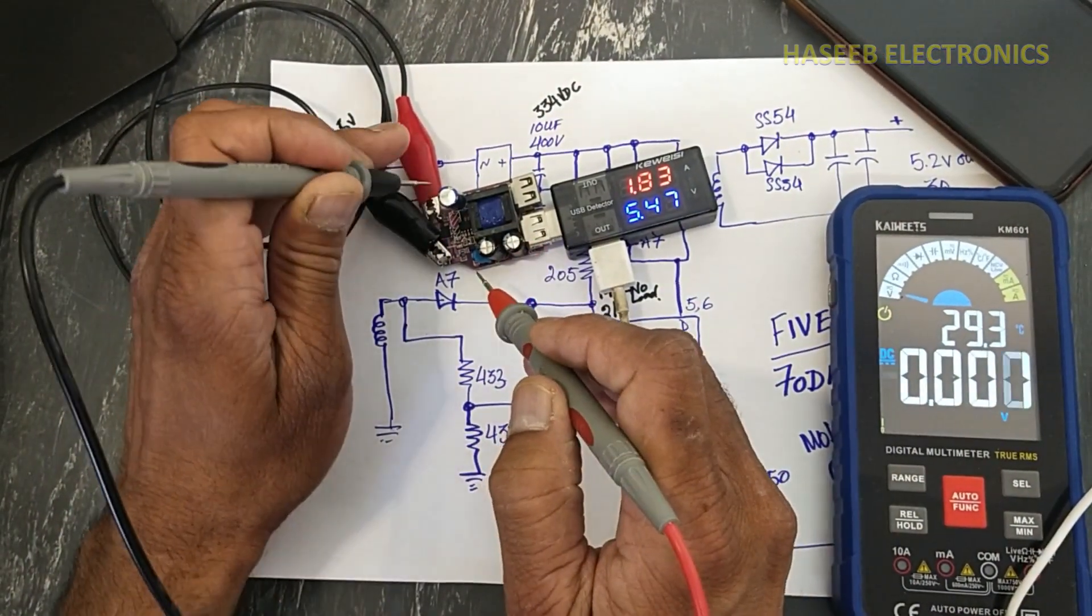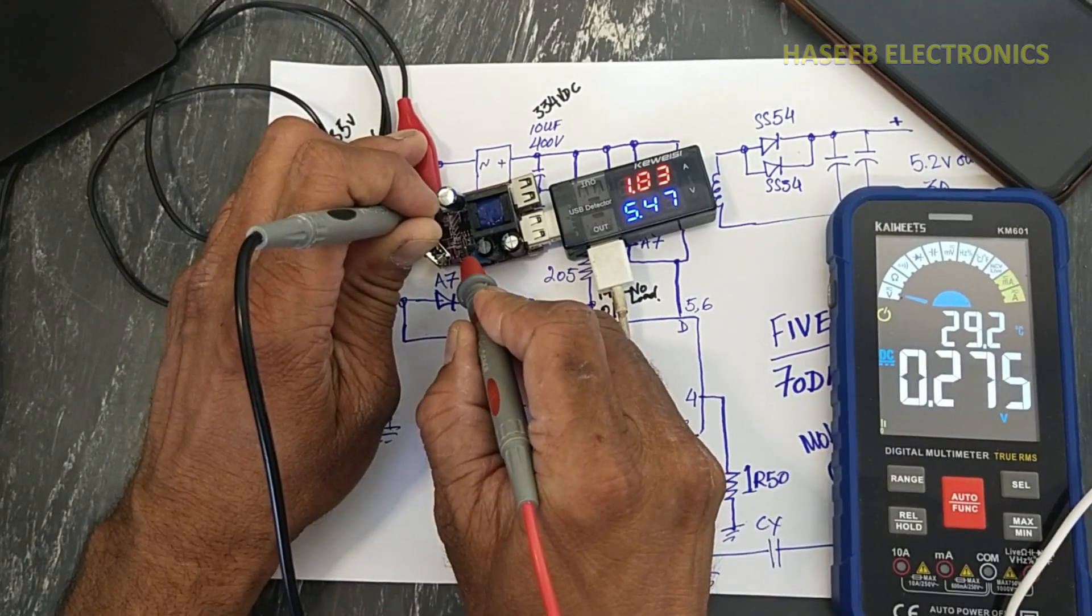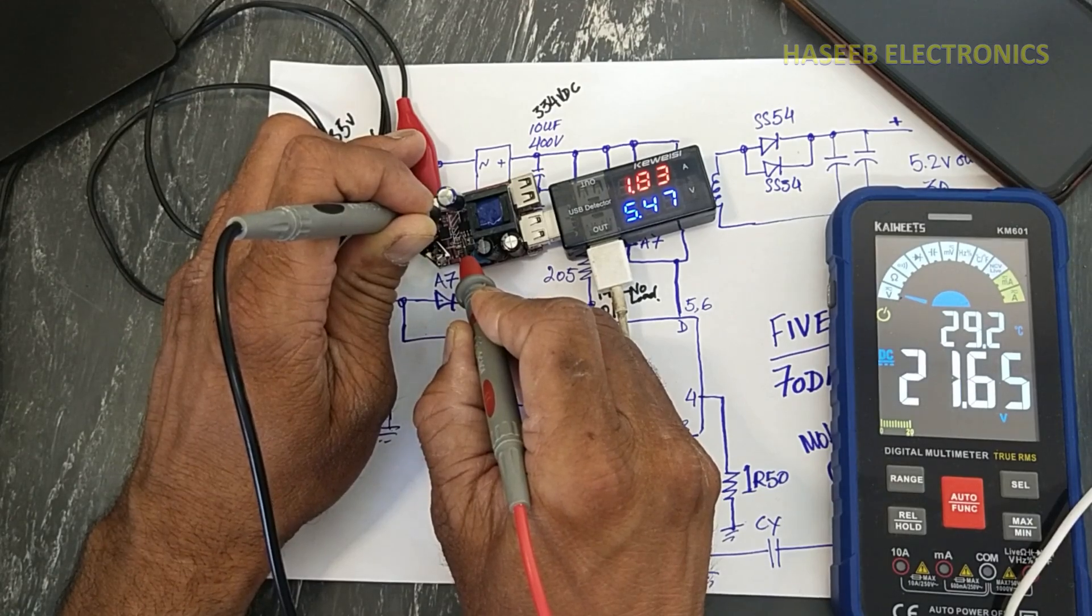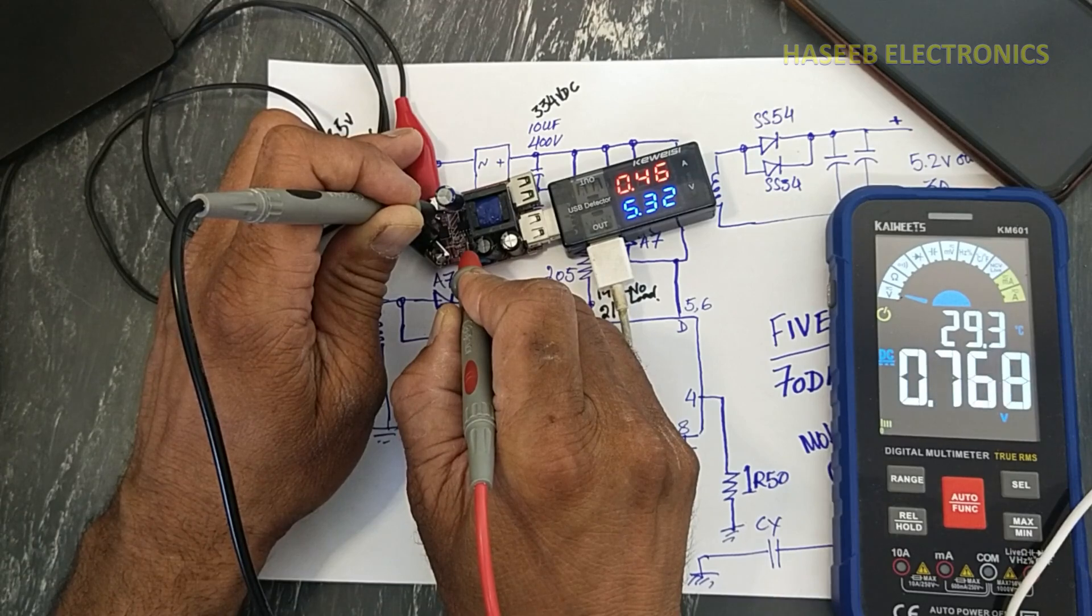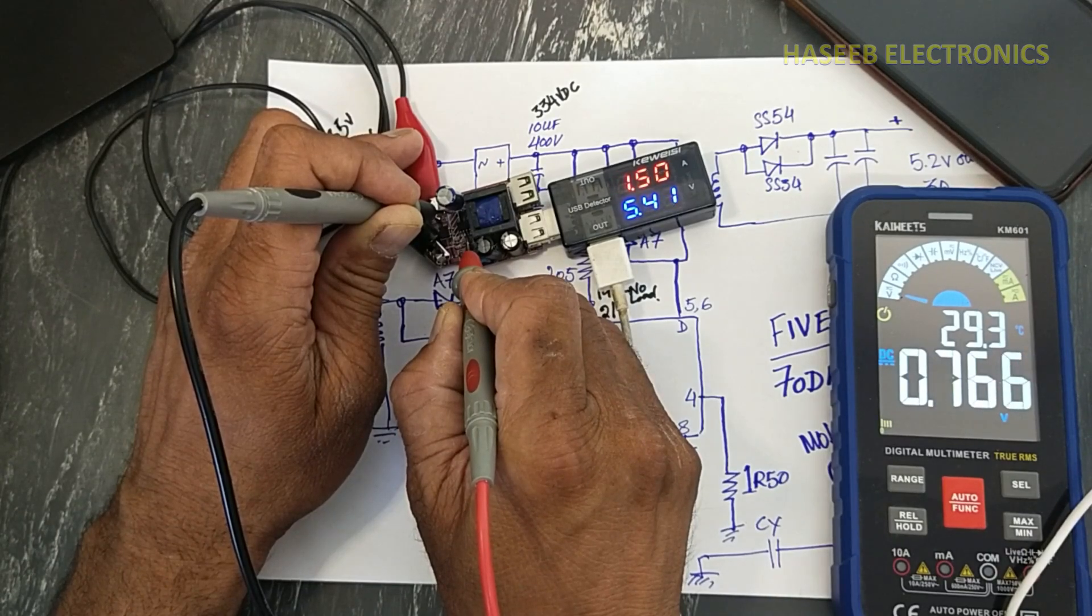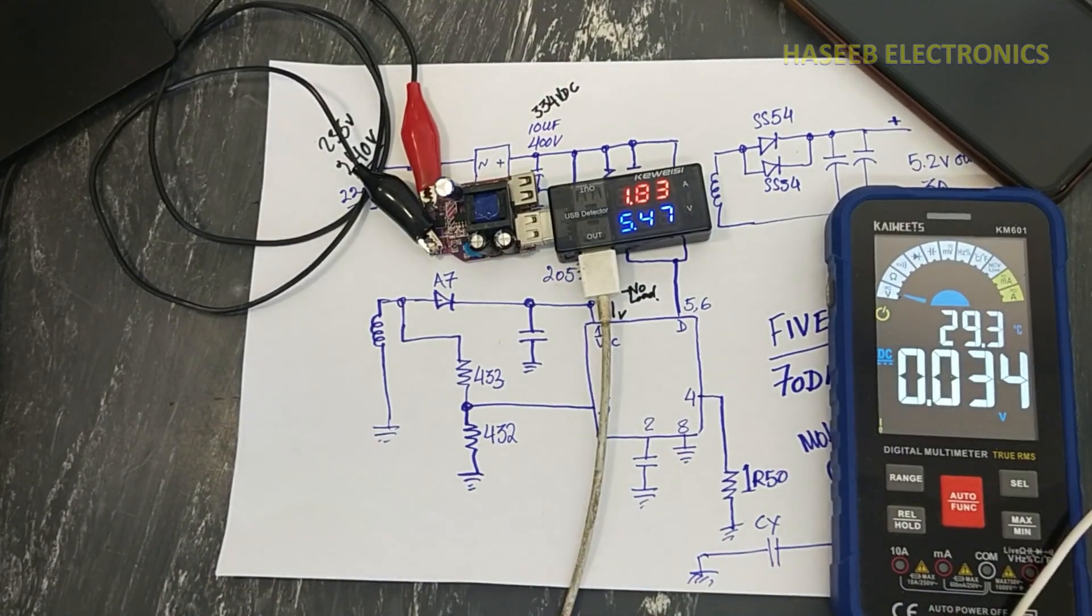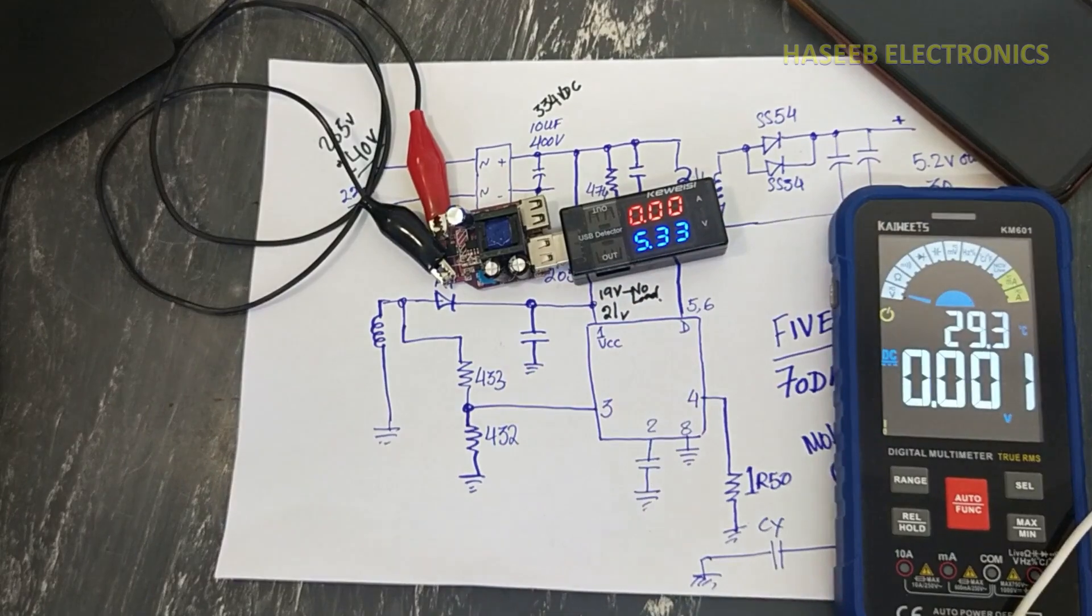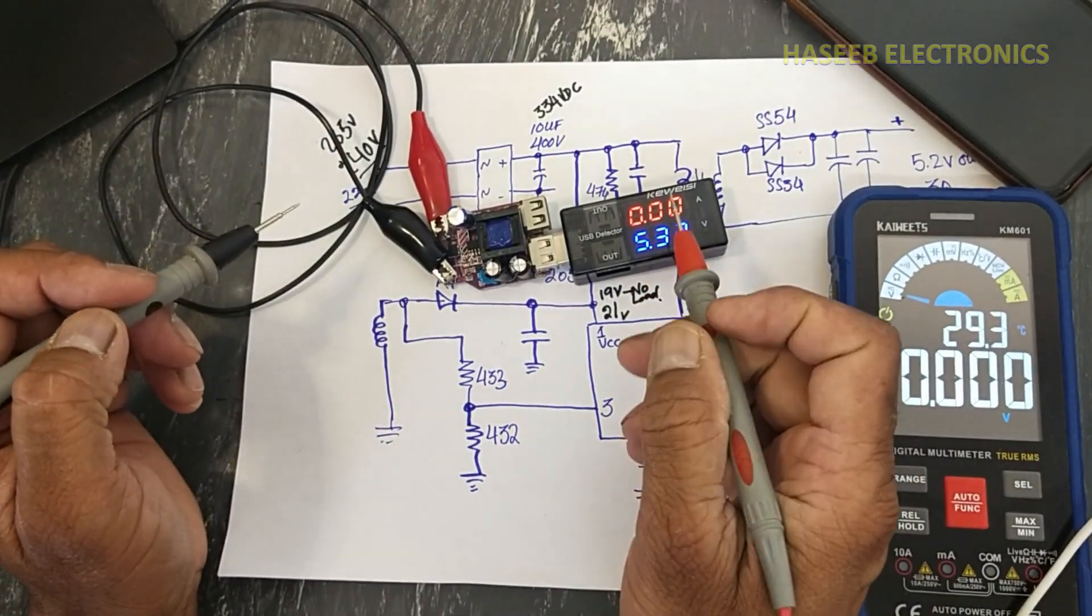Now the load is increased at 1.8 ampere. If we check pin number one now, 21.65 volts. And if we check now pin number three, it is now 0.76 volts. So this pin will monitor the amount of voltage, how much voltage and what is the load size in the output.